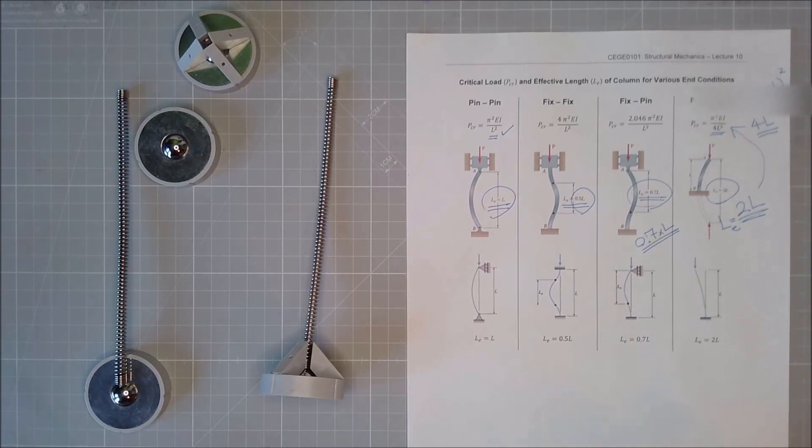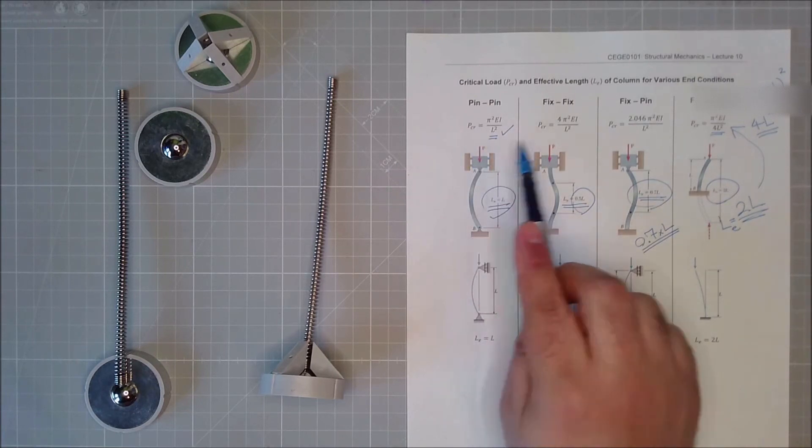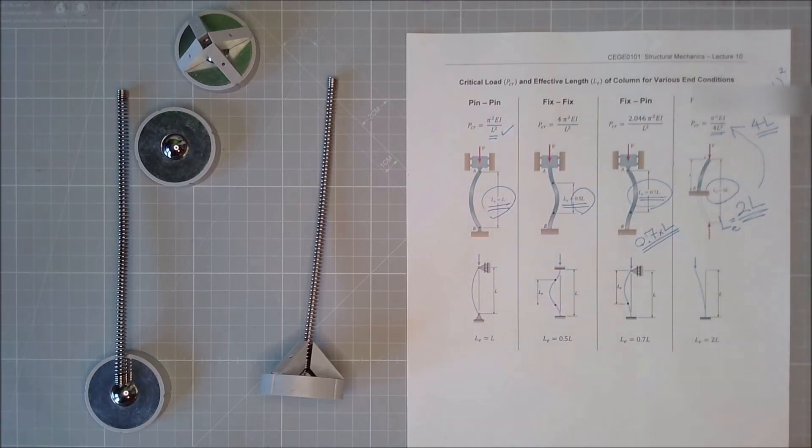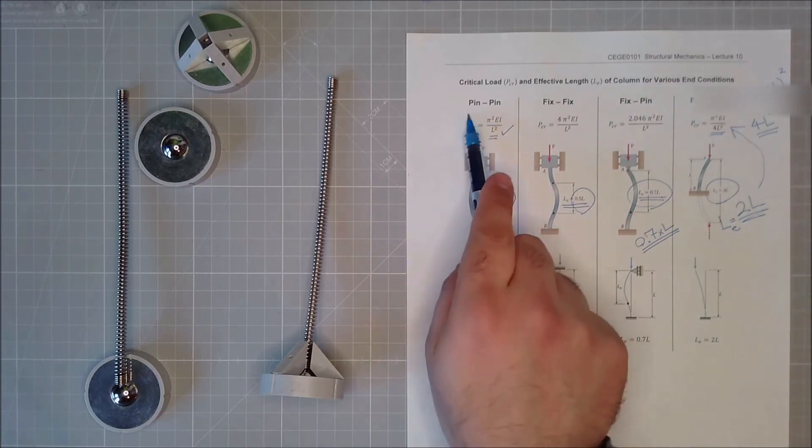So effective length changes the critical load that we have, depending on the conditions that you have in your support. This is simply how we extend that Euler theory to other columns with other end conditions, rather than just pin-pin.